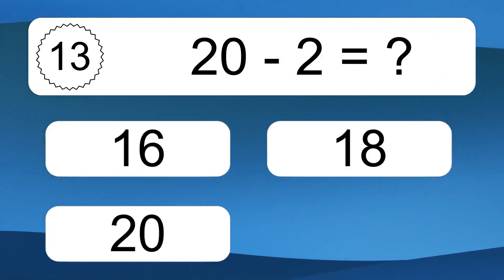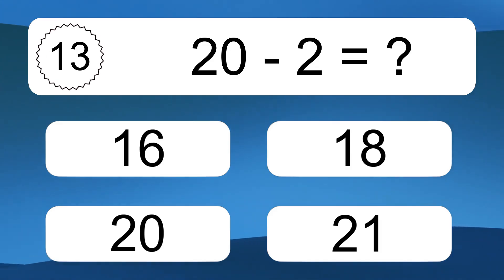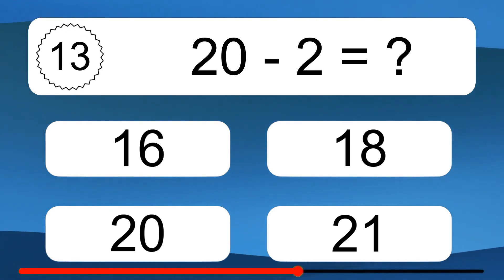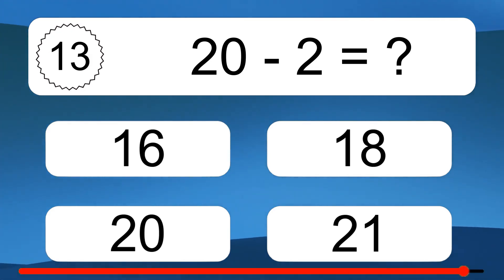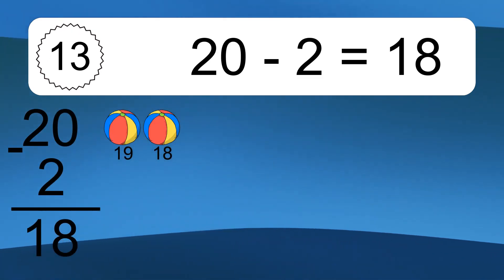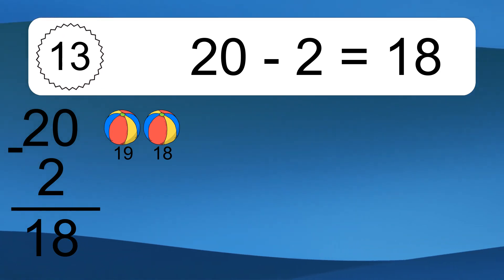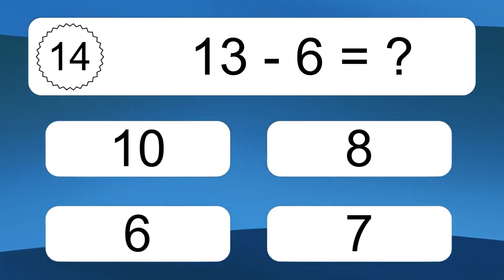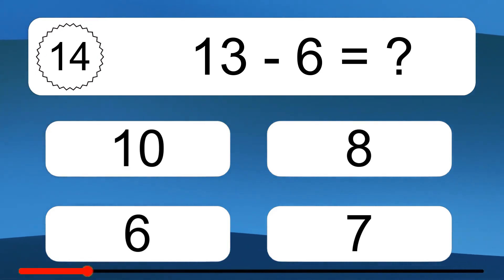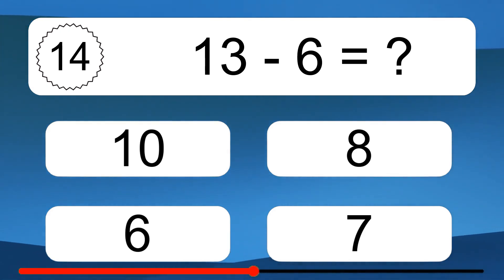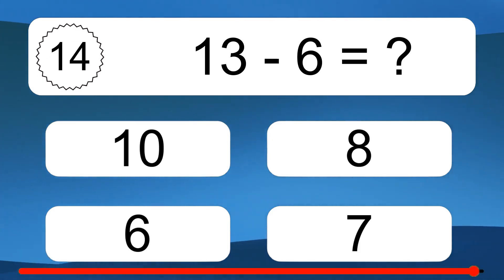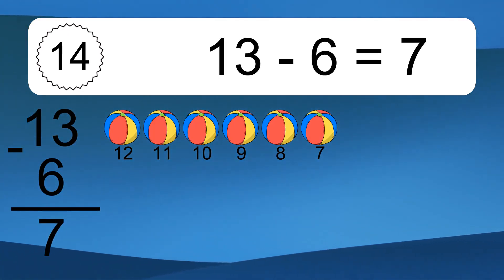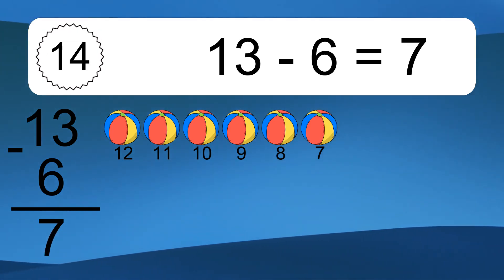20 minus 2 equals what? Let's count it: 19, 18. 13 minus 6 equals what? 13 minus 6 equals 7. Let's count it: 12, 11, 10, 9, 8, 7.